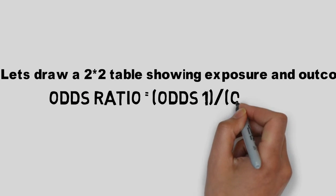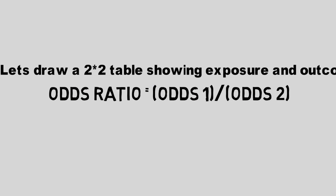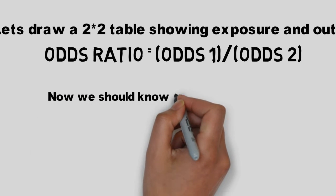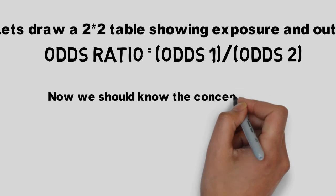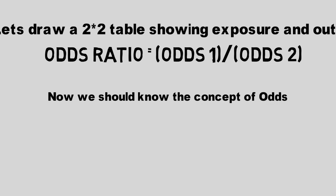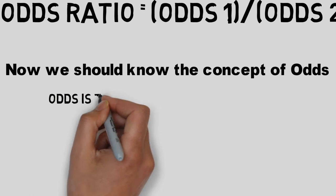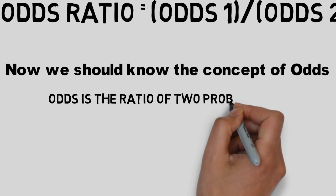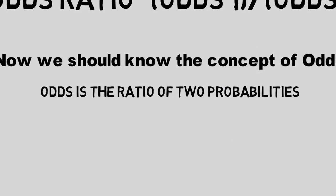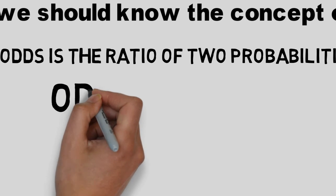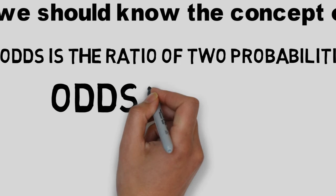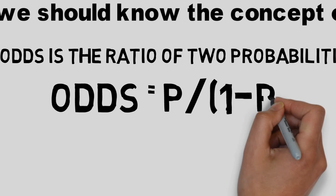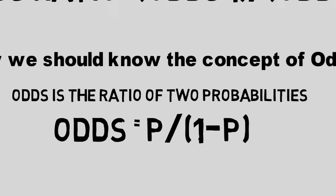We know that odds ratio is the ratio of two odds — that is Odds1 divided by Odds2. But before that, we need to know the concept of odds. Odds is simply the ratio of two probabilities: the probability of an event happening to it not happening. So if P is the probability of an event happening, then 1 minus P is the probability of it not happening.